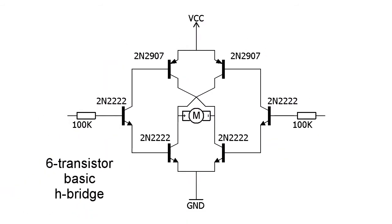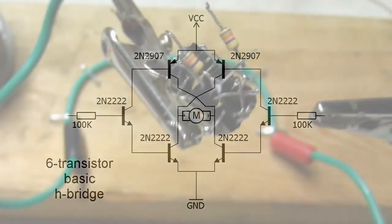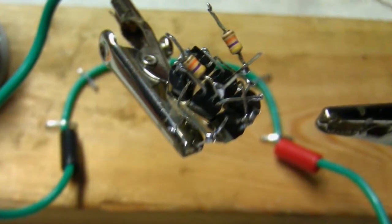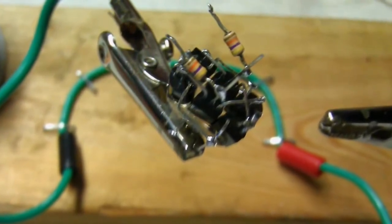Note that they don't have any protection diodes but with a bicore you can be pretty sure only one input signal is going to be high at a time. This is what it looks like when you freeform solder one of these little six transistor H-bridge circuits.